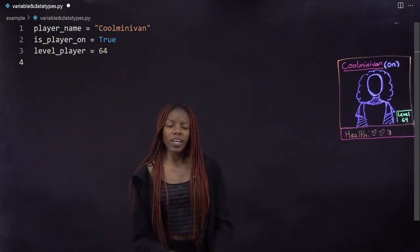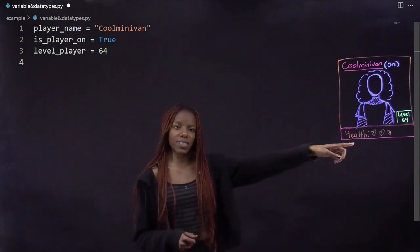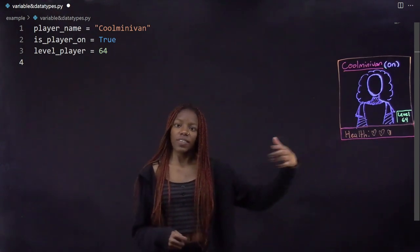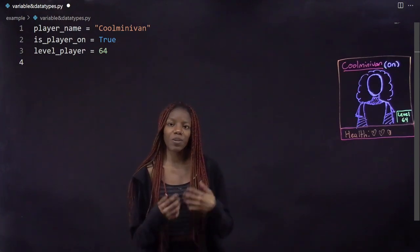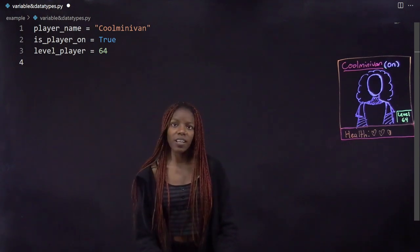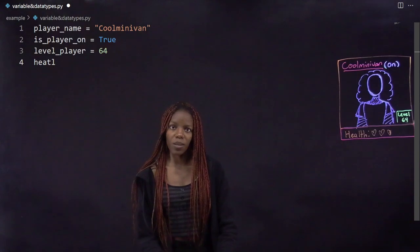So we can also represent her health as a number, but as we can see, there's half of a heart. That isn't a whole number, so we would use, or sorry, we'll use a float or double variable. And like all other variables, we start off with naming it.